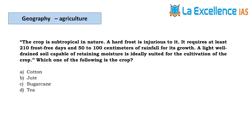The next question gives features to identify a crop. The crop is subtropical — tea won't be cultivated in subtropical conditions. A hard frost is injurious to it — not sugarcane, so it's cotton or jute. It requires at least 210 frost-free days and 50-100 cm rainfall. Jute grows in West Bengal where rainfall is abundant. Cotton requires comparatively less rainfall, and importantly, soil capable of retaining moisture. The answer is cotton.